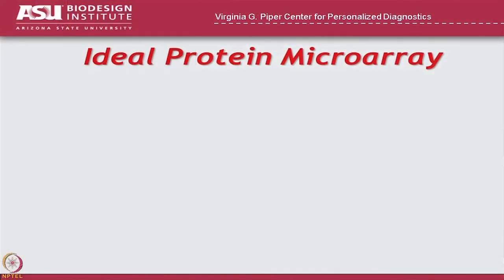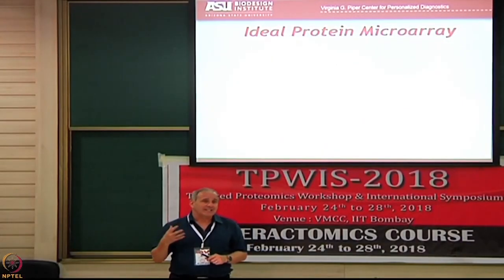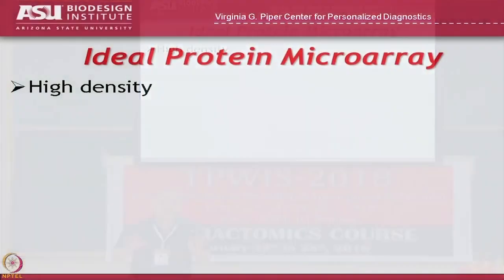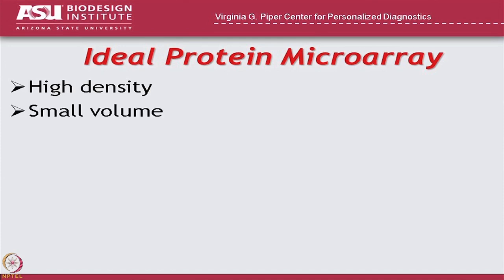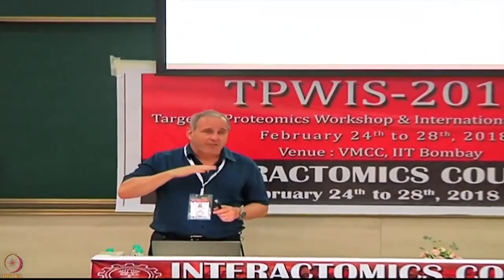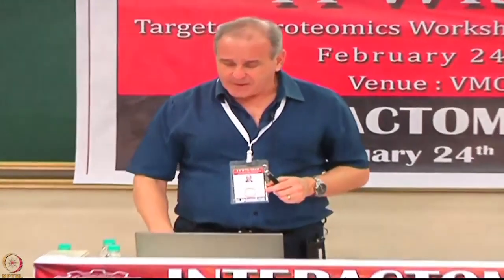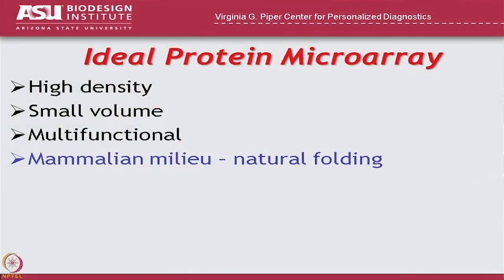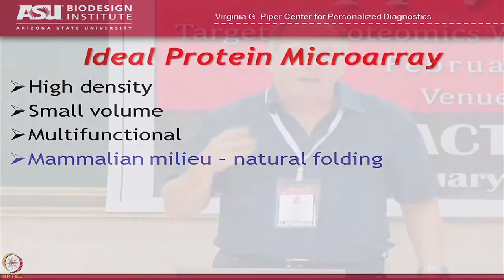Let's start by asking: what are the ideal qualities we want in a protein array? I would argue the first thing has to be high density — the whole point is to get lots of different proteins in a very small space. Of course you want to work with small volumes; the advantage is you can take only a few hundred microliters of serum and test thousands of proteins. It needs to be multifunctional. But you also want natural folding — you want the proteins on the array to look like they do in normal circumstances, ideally made in a milieu similar to the one in which they normally occur.